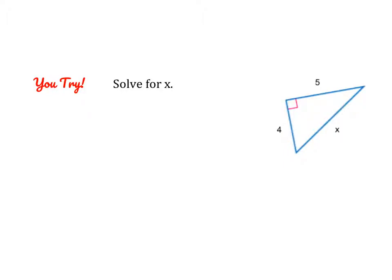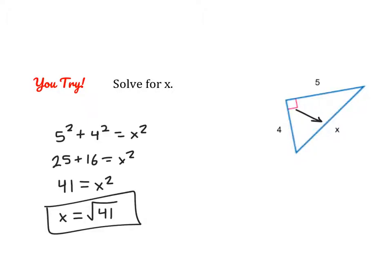Go ahead and pause the video and give this problem a try. Go ahead and check your work. 5 squared plus 4 squared equals X squared. Simplify, and you should end up with the square root of 41, which cannot be simplified.